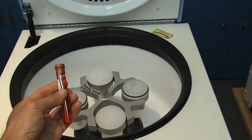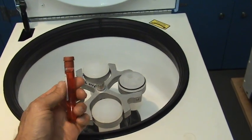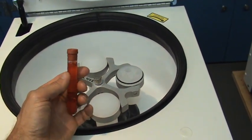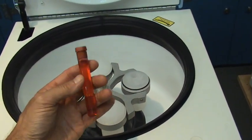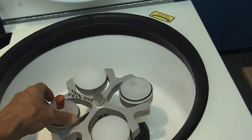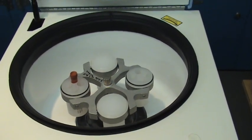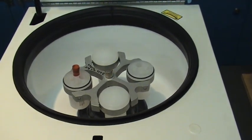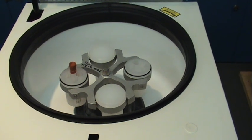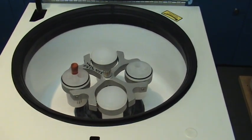If we load this centrifuge rotor with this specimen tube, this is a 10 milliliter plastic tube with colored water. As you can see it's quite full. If we load this into one of the positions on the rotor, this tube weighs about 20 grams. You'll quickly see that this centrifuge is not capable of tolerating this imbalance.